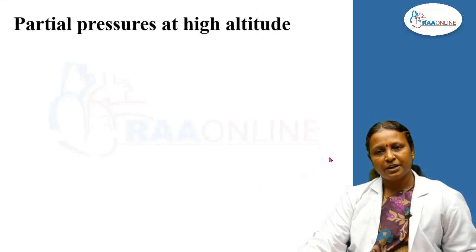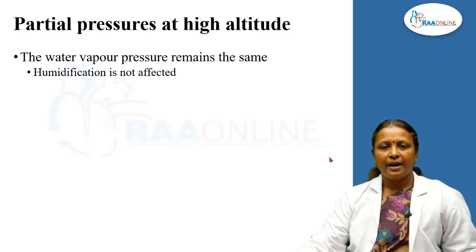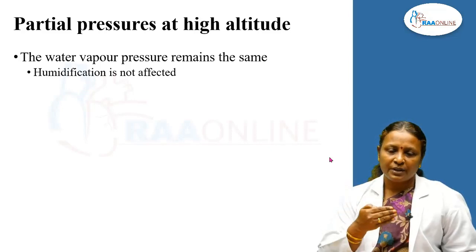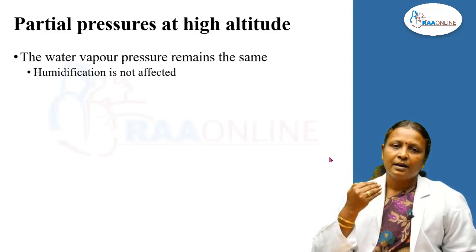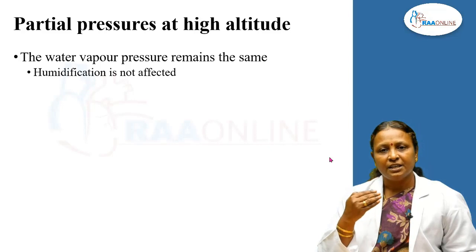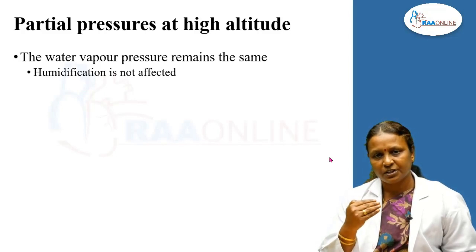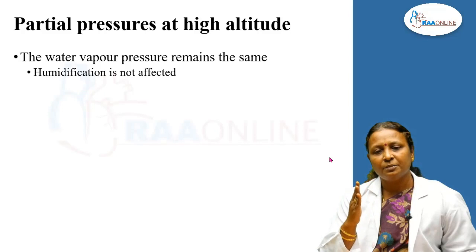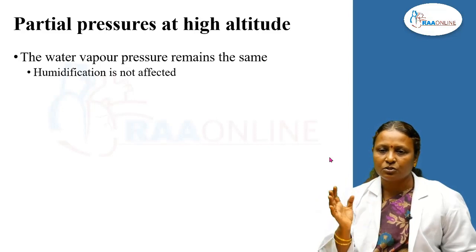What happens to the partial pressure of gases within the alveoli at high altitude? The water vapor pressure remains the same. As air is breathed in, it gets humidified by the addition of water vapor to the inspired air. Humidification is determined by body temperature. Even at high altitude, the core temperature of the body is maintained in the normal range. Therefore, the water vapor pressure does not increase — normally, after humidification, 47 mmHg of water vapor is added to the inspired air, and this does not change.